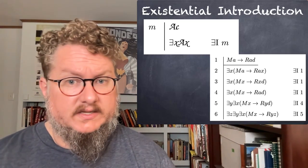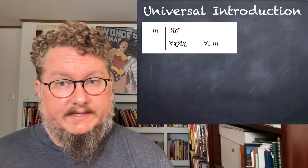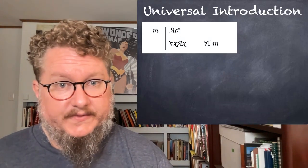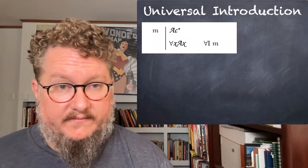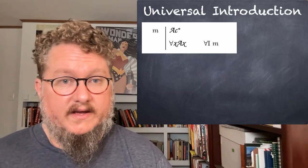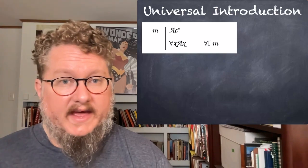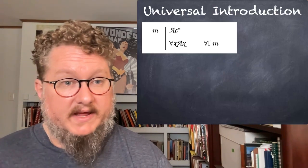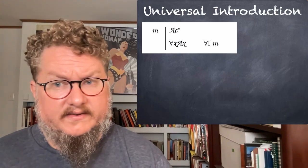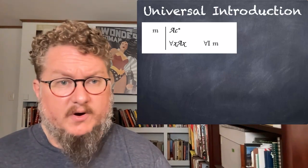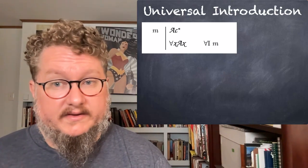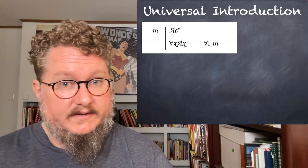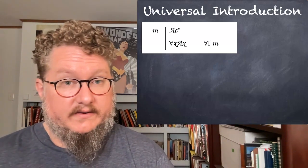The universal introduction rule is a little bit more complicated. It looks a lot like the existential introduction rule, with a caveat. We have some line M that has a sentence with a constant in it — call that sentence A, call that constant C. We can replace that constant C with a variable and apply the universal quantifier, but only if the constant C does not occur in any of the premises of our argument or in any undischarged assumption in a sub-proof. Only if you have it there totally arbitrarily can you use it in a universal introduction.